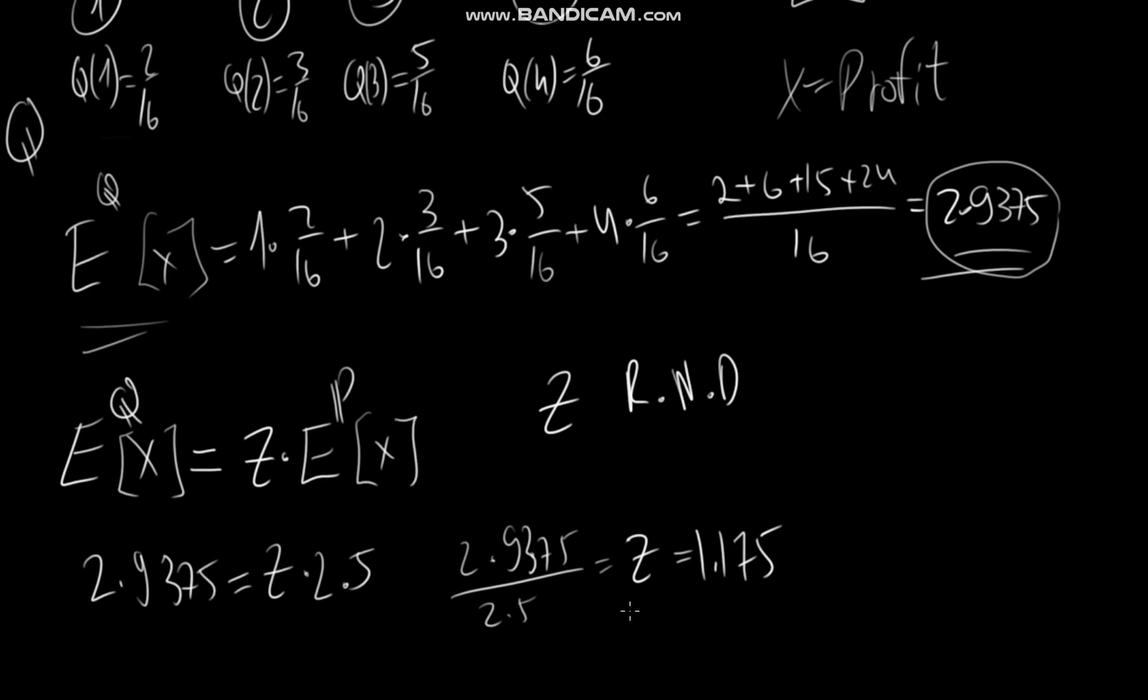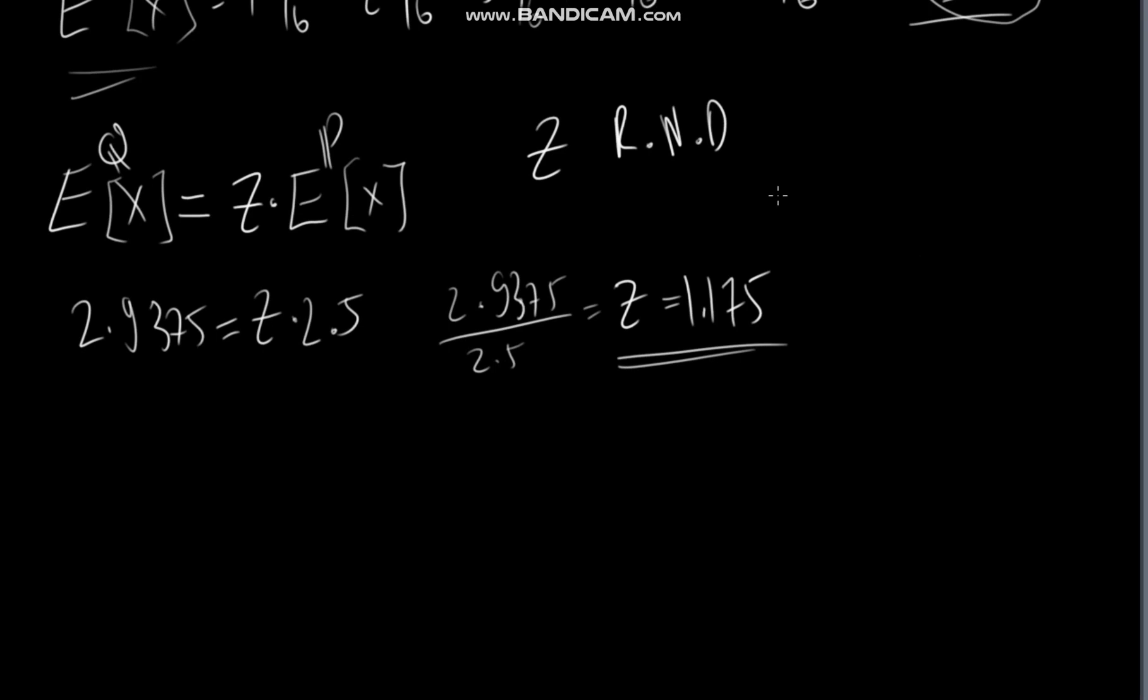So in our simple case, this is the Radon Nikodym derivative. What it tells us is that if we want to calculate the probability under Q or if we want to take the probability under P, all we have to do to switch from this to this is to multiply or divide by this Z, which is 1.175.